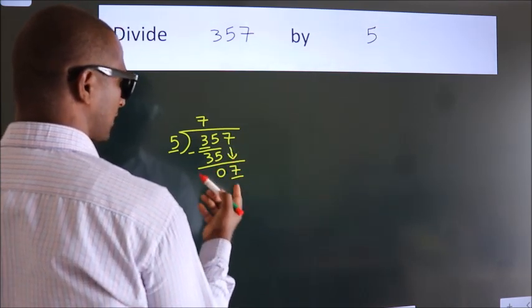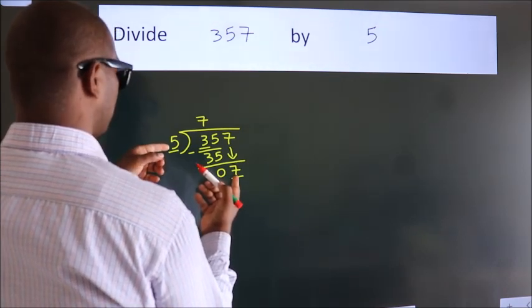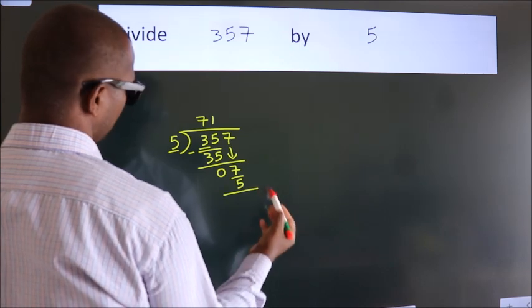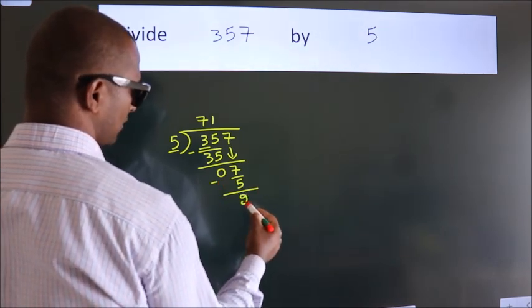So, 7. A number close to 7 in the 5 table is 5 times 1 equals 5. Now, we subtract. We get 2.